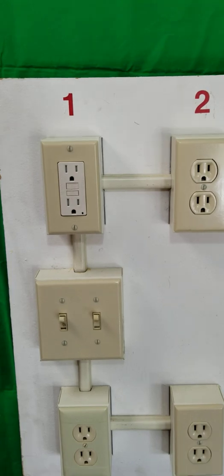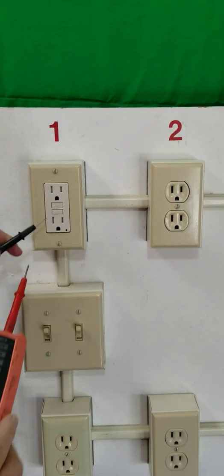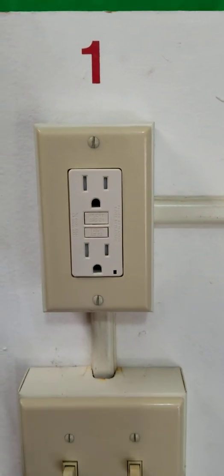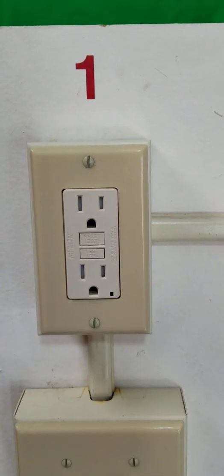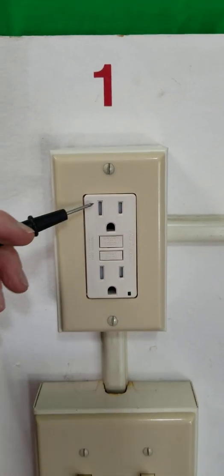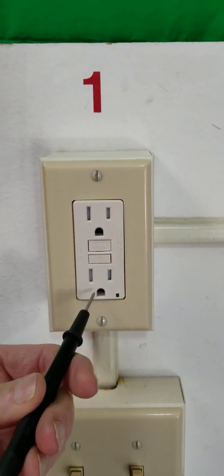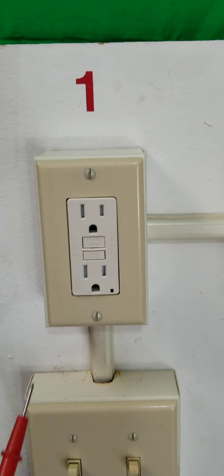Now this happens to be a GFCI. You have two slots. One is a large slot, one is a small slot. The small slot is the live wire, and the big slot is the neutral wire. And then we have the third slot right here, which is the ground.